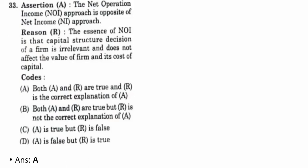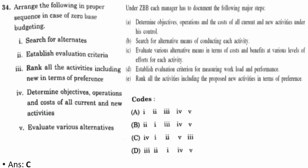Thirty-third question — assertion and reasoning: The NOI (Net Operating Income) approach is opposite to the net income approach. The reason is the essence of NOI is that the capital structure decision of a firm is irrelevant and does not affect the value of the firm and its cost of capital. Both A and R are true and the reason is the correct explanation of assertion. The correct answer is A.